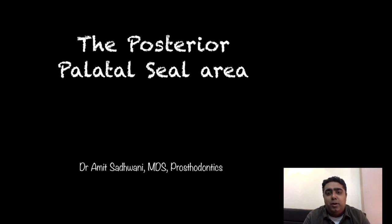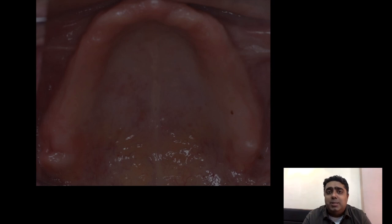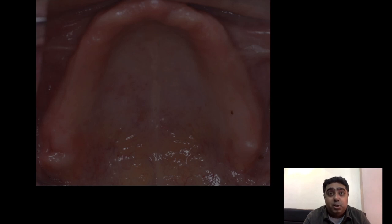Hi, my name is Dr. Amit Sadhwani. I'm a prosthodontist from Mumbai, India. The question is: why would one want to seal the area — wouldn't a mere extension suffice? The reason to create a seal is to resist the displacement of the upper denture in function. It helps the denture resist horizontal and lateral torquing forces.